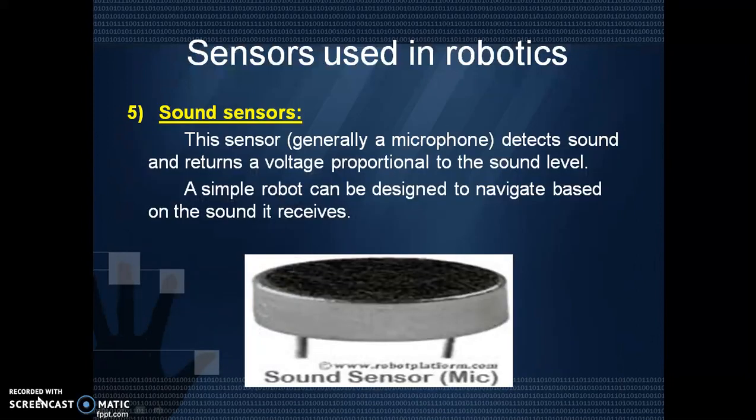The fifth one is sound sensors. This sensor, generally a microphone, detects sound and returns a voltage proportional to the sound level. A simple robot can be designed to navigate based on the sound it receives. This image is of a sound sensor.